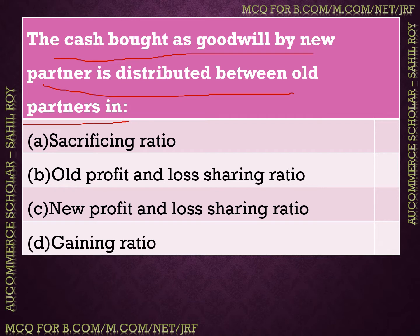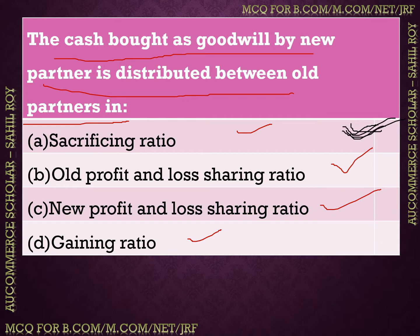Keep in mind: decrease in assets and increase in liabilities goes on the debit side of revaluation account. The next question: When a new partner pays cash, that amount is divided in which ratio? Options: sacrificing ratio, old profit and loss sharing ratio, new profit and loss sharing ratio, or gaining ratio. The answer is option A: sacrificing ratio.